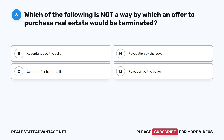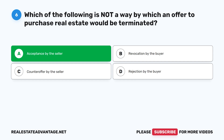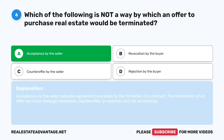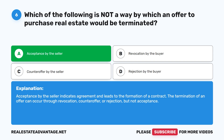Question 6: Which of the following is NOT a way by which an offer to purchase real estate would be terminated? The correct answer is A: Acceptance by the seller. Acceptance by the seller indicates agreement and leads to the formation of a contract. The termination of an offer can occur through revocation, counteroffer, or rejection, but not acceptance.